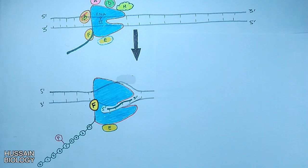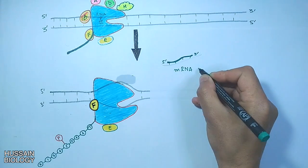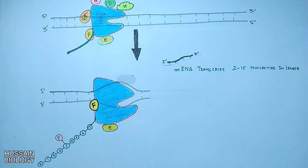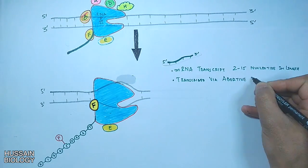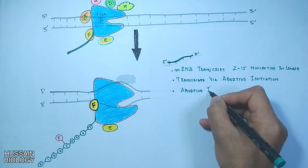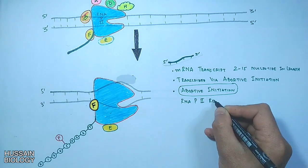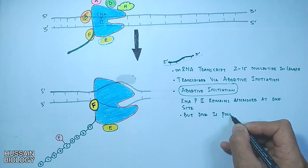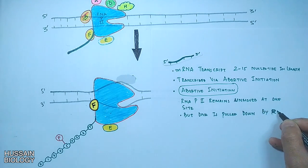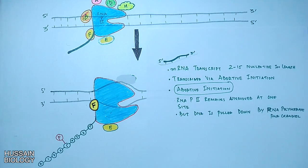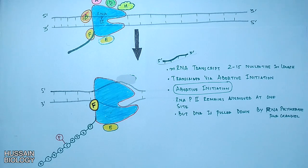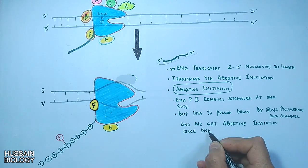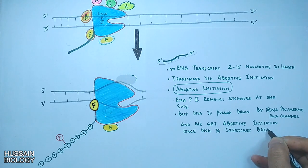So first we get the small mRNA transcript by the abortive initiation. mRNA transcripts of about 2 to 15 nucleotides in length are made via abortive initiation. But it must be noted here that RNA polymerase 2 remains unmoved at one site. But here the DNA is pulled down to the RNA channel by transcription factor H, and by this way RNA polymerase synthesizes small mRNA transcripts until the DNA stretches out and polymerase moves.